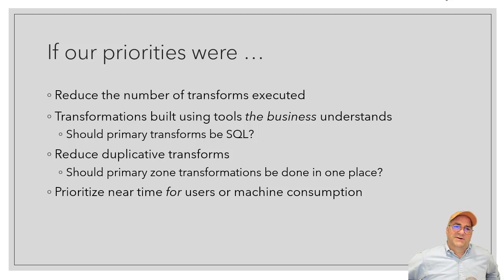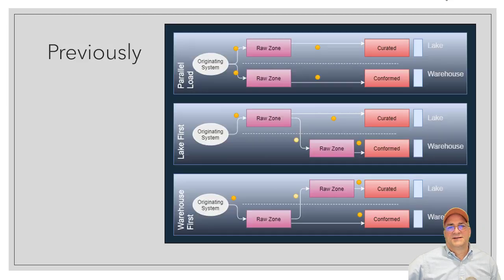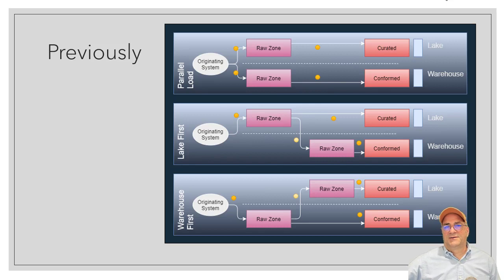Maybe all the primary zones — if I had a raw zone and a conform zone — those might be in two different places, like a lake and a warehouse, but the transforms to build those two would only be in one place. We might prioritize near-time for either users or machine consumption, but not both, and then copy to a place that's fit for purpose. Previously, we looked at loading in parallel, loading warehouse-first, and loading lake-first.